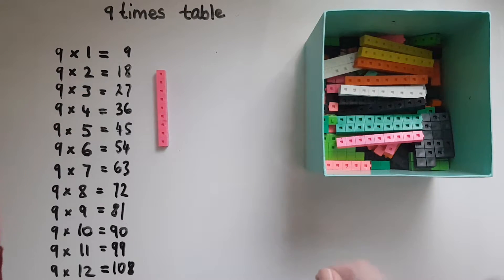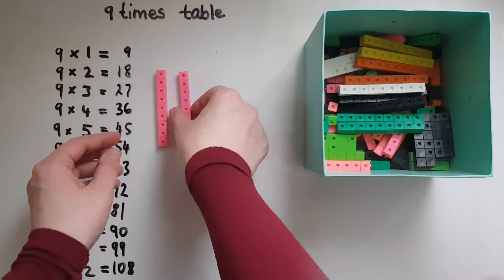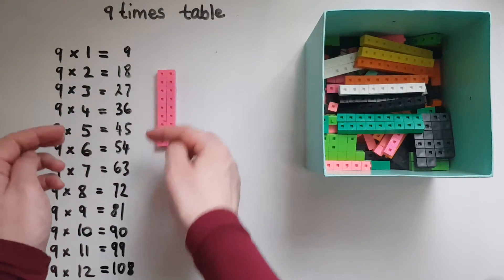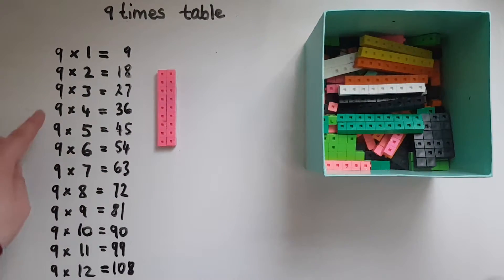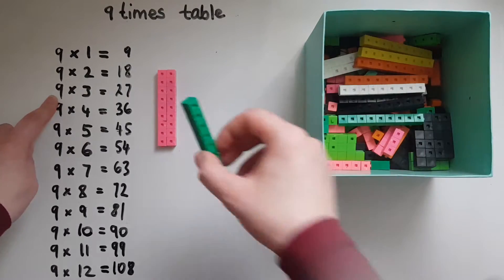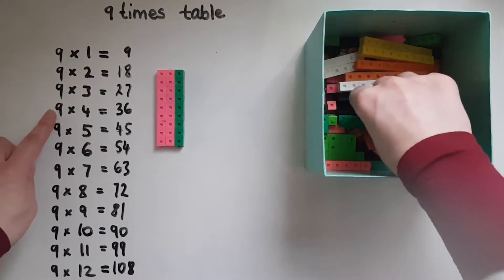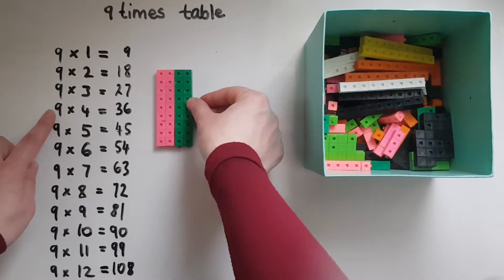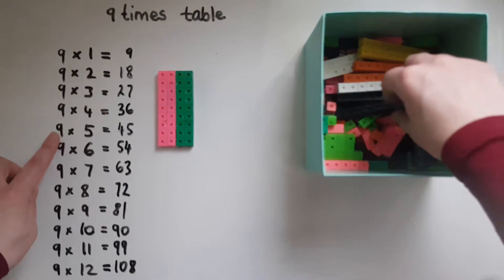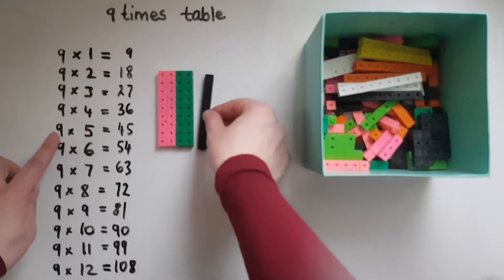9 times 2: if I do this 9 times and get 2 each time, I'll end up with 18. 9 times 3 is 27. 9 times 4 is 36. 9 times 5 is 45.